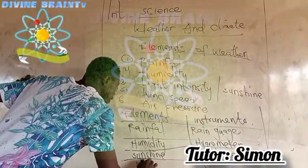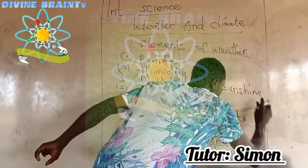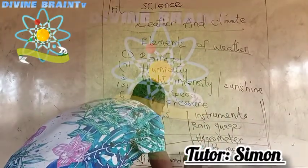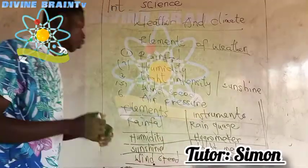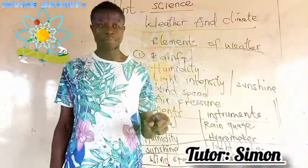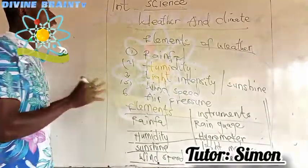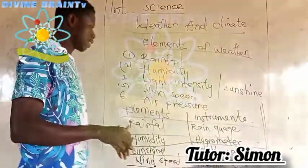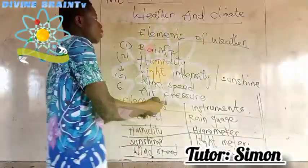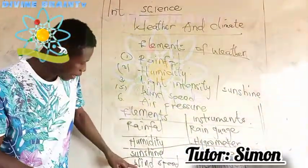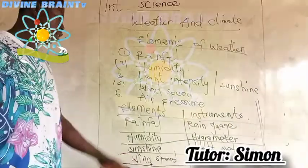Next, wind speed — measured by an anemometer. It is used to measure the speed of wind. I will show you pictures and diagrams later. In the exam, they can bring a diagram and ask you to identify it and write its function or uses. So diagram A is an anemometer, and its function is that it is used to measure the speed of wind.